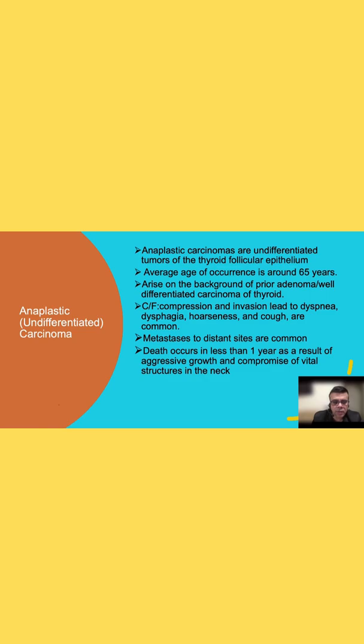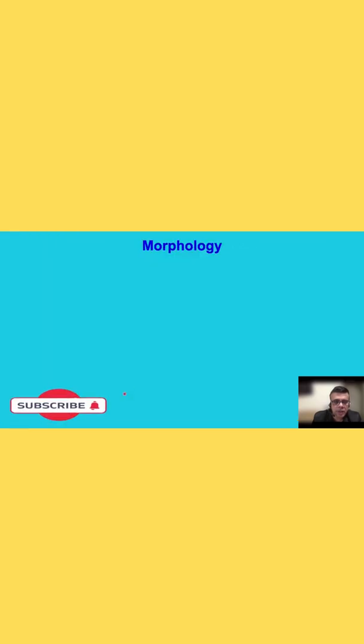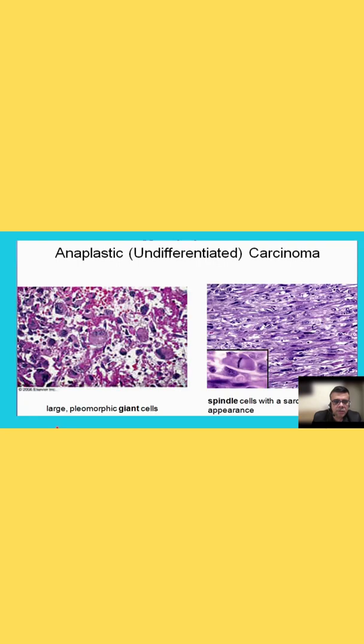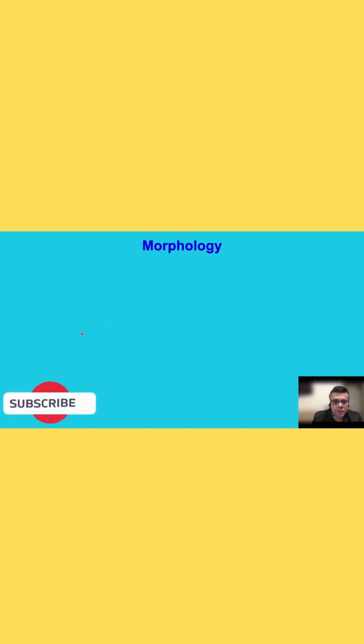Death generally occurs within less than one year in many patients. Regarding morphology, the cells show a very pleomorphic appearance, an extremely spindloid appearance, and many giant cells — these are the high-yield morphological features.